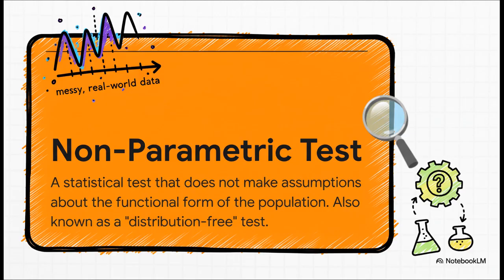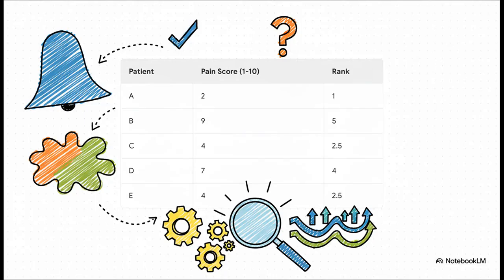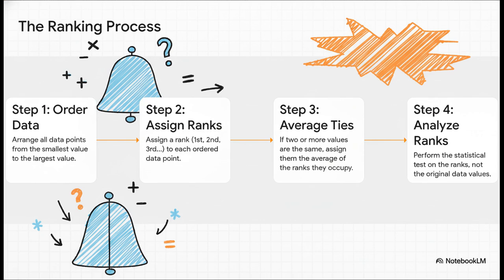They just don't care if your data fits into a perfect bell curve — they can still get the job done and get it done right. So how do they pull this off? It's a really clever trick. Instead of looking at the exact values of the data, they focus on the ranks. We've got 5 patients with different pain scores. Instead of analyzing the numbers — 2, 9, or 4 — the test just asks: who had the lowest pain? Who was next? It turns all the values into a simple order: first, second, third, and so on. This is brilliant because it makes the test far less sensitive to those crazy outliers. Step one: line up your data from smallest to largest. Step two: assign a rank to each point. What if you have a tie — like two patients who both scored a four? No problem. You just average the ranks they would have taken up, so instead of one getting rank two and the other rank three, they both get 2.5. Then you do all your statistical analysis on those ranks, not the original scores. It's a really elegant way to handle unruly data.